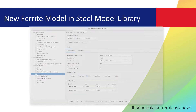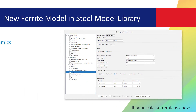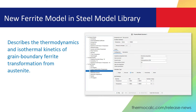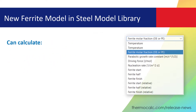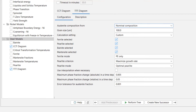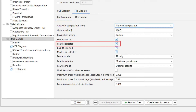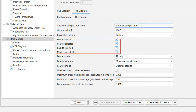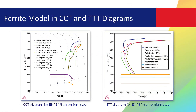A ferrite model has been added to the Steel model library. This new model describes the thermodynamics and isothermal kinetics of grain boundary ferrite transformation from austenite. This model can calculate diffusional growth rate constant, grain boundary nucleation rate, and isothermal transformation times of ferrite. The new ferrite model has also been incorporated into the TTT and CCT diagrams in the Steel model library, which combine the pearlite, bainite, martensite, and now ferrite property models and calculate the kinetics of concurrent transformation of austenite into ferrite.